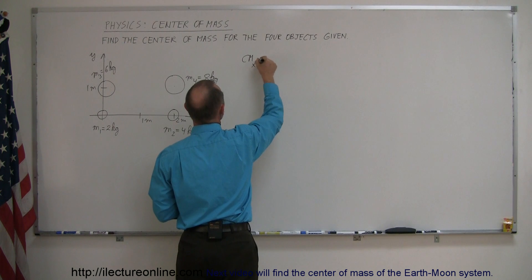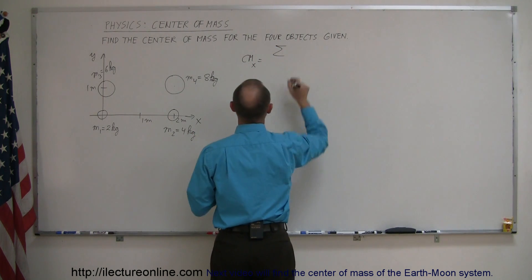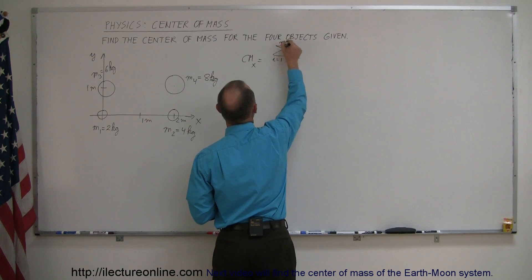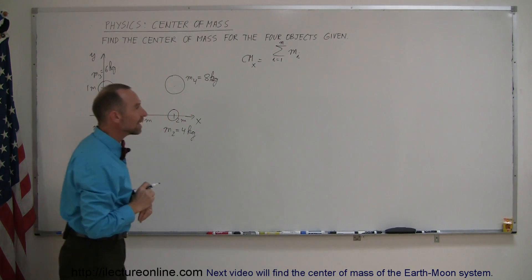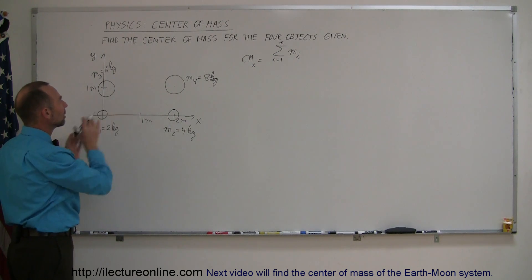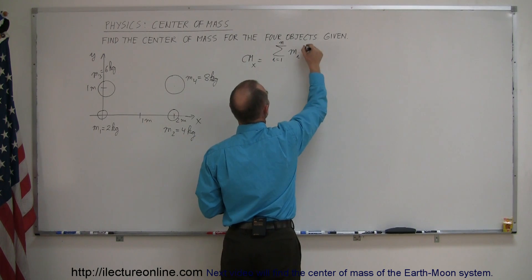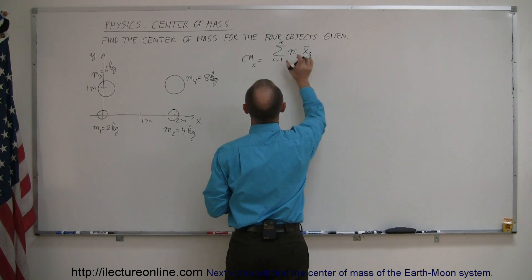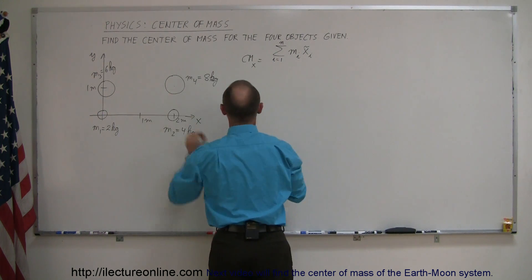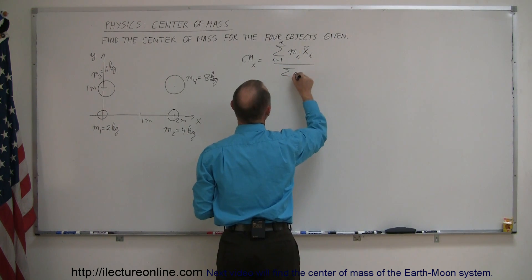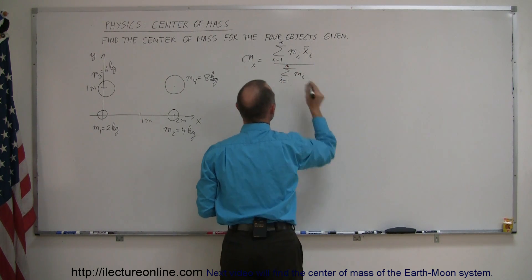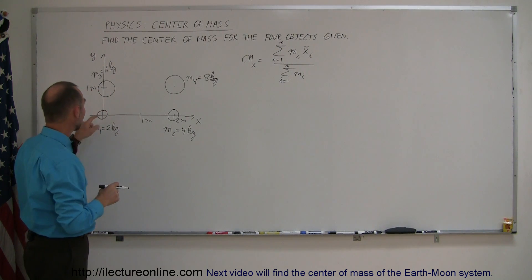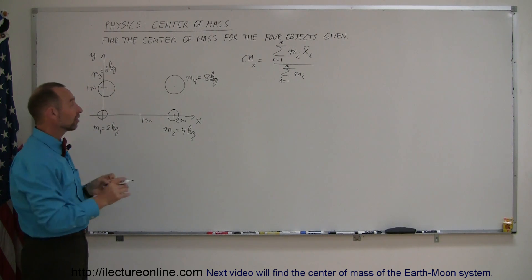The center of mass in the x-direction is equal to the sum of the product of the masses of each object — mass i, from i equals 1 to n, however many there are — multiplied times the x-coordinate of each of those items. You multiply the mass of each object times the x-coordinate of the center of mass of each of those objects, divided by the sum of all the masses, i equals 1 to n, n being the number of masses you have.